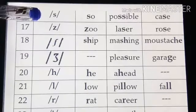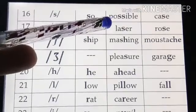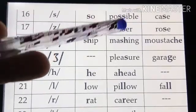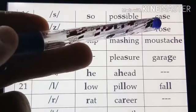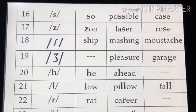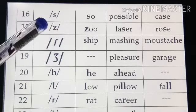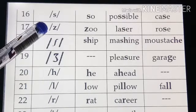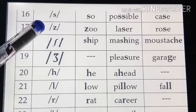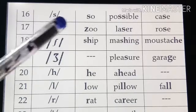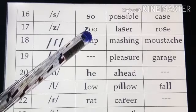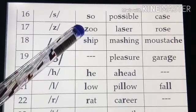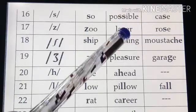This is /s/ — as in 'so', 'possible'. Double 's' is here, and we must be very careful with the letter S as it can give many sounds. Next, this is /z/ — the sound of a buzzing bee. For example: 'zoo', 'laser'.